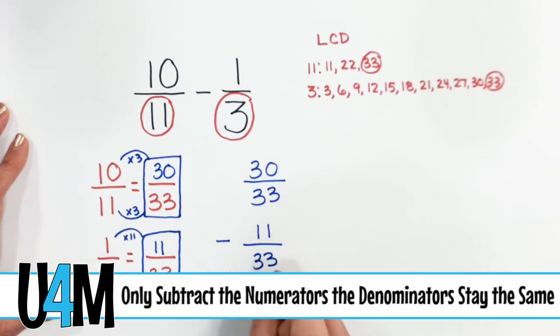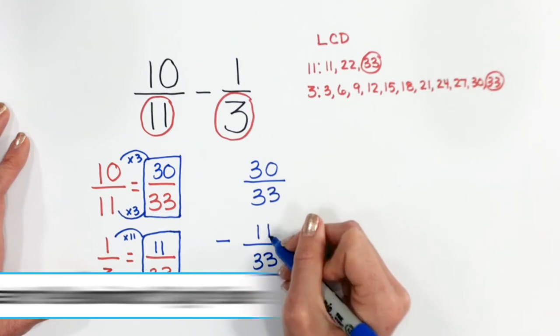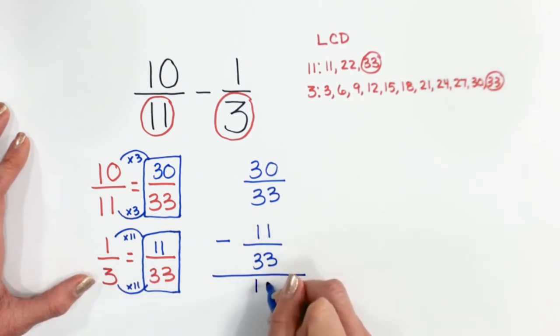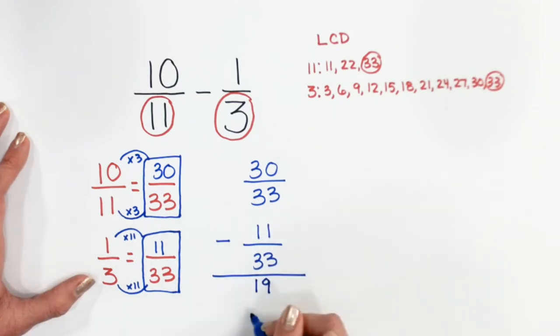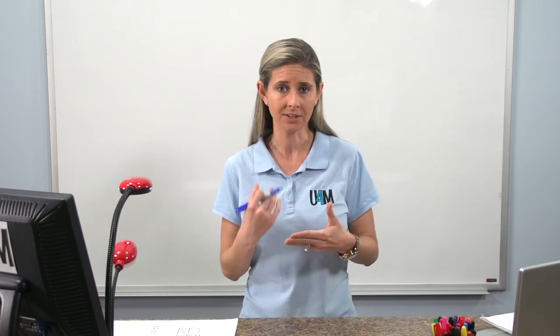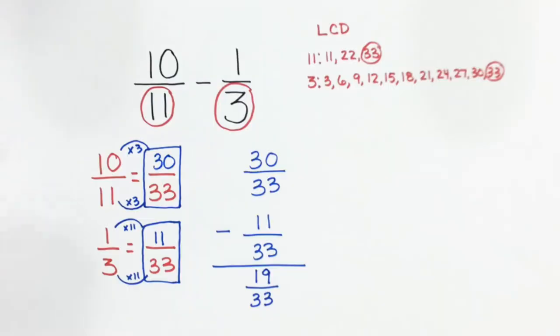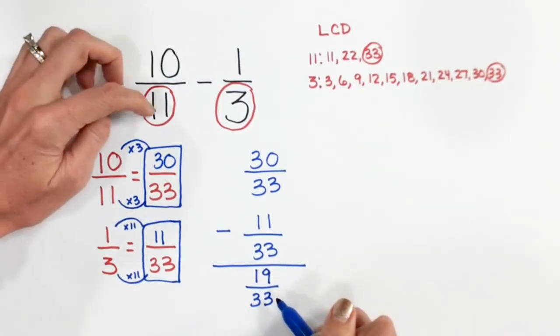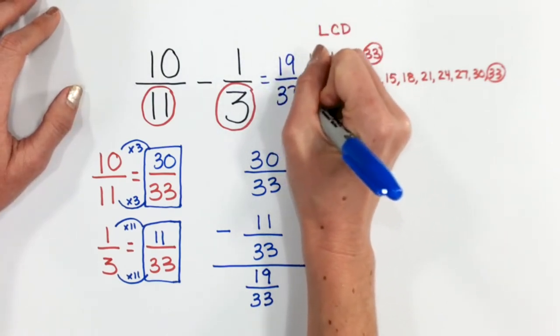So let's rewrite these so we can clearly see which two fractions we're subtracting. Now we simply subtract our numerators — our denominators will stay the same. So thirty minus eleven is going to give me nineteen, and thirty-three is our denominator which stays the same. This is where some students get confused because we're subtracting the numerators but not the denominators. When we're subtracting our fractions, we subtract the numerators but the denominators stay the same. So ten-elevenths minus one-third gives me nineteen over thirty-three.